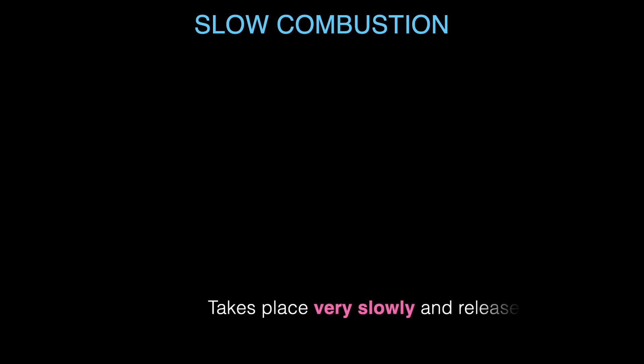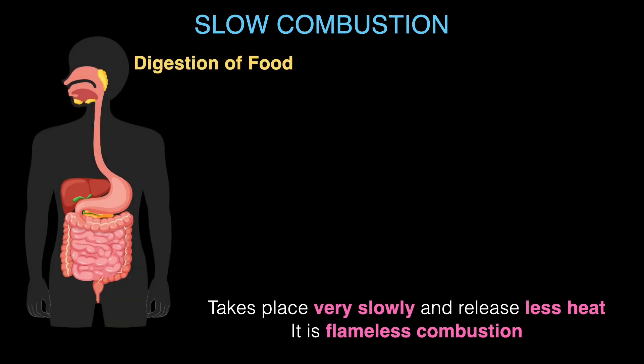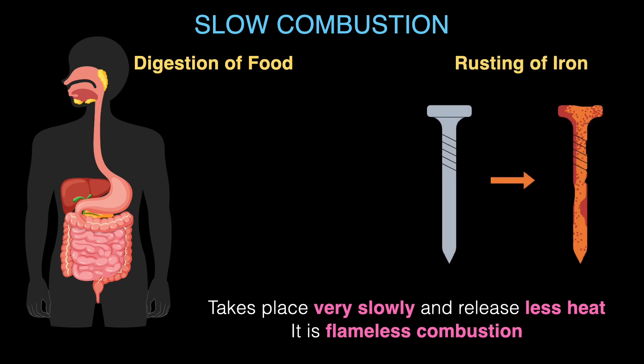Finally, let's talk about the most low-key type of combustion — the invisible one called slow combustion. This one is sneaky; it doesn't give off much heat or light and happens so slowly you probably wouldn't even notice. Examples include the digestion of food in our body — yes, it's a little difficult to believe, but it is a type of combustion — and another good example is the rusting of iron.